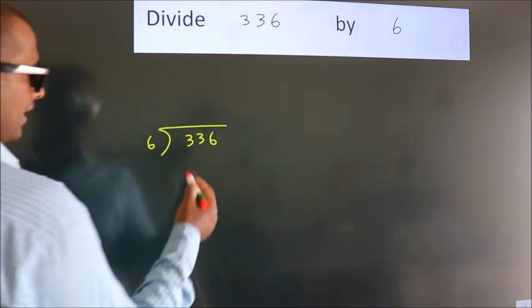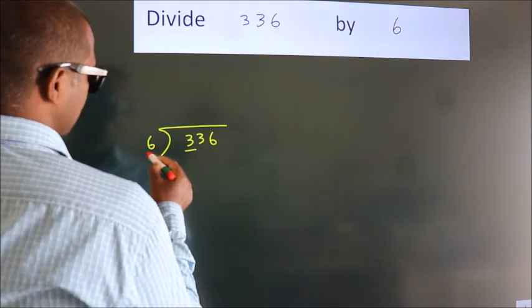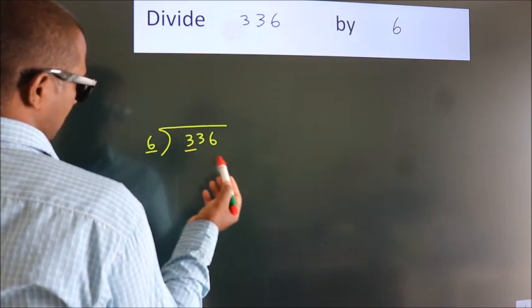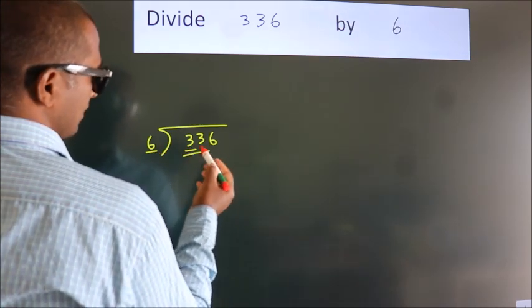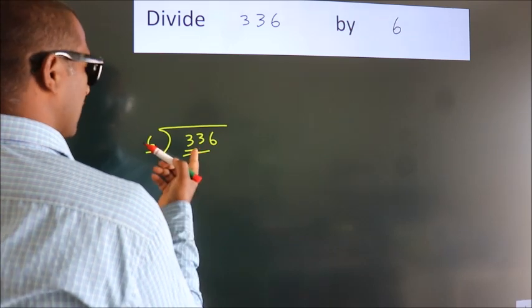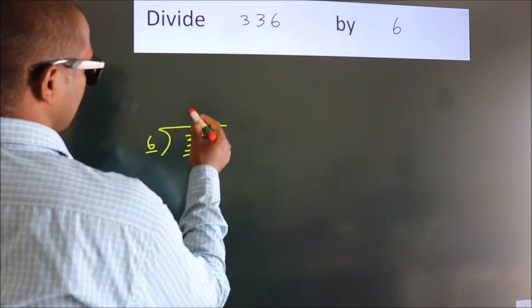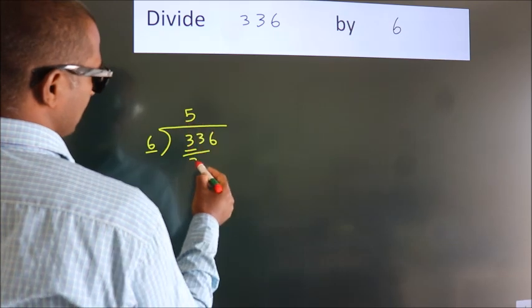Next. Here we have 3, here 6. 3 is smaller than 6, so we should take 2 numbers: 33. A number close to 33 in the sixth table is 6 times 5, which is 30.